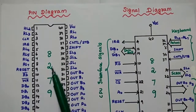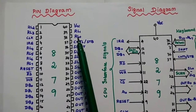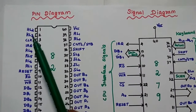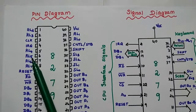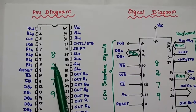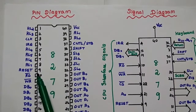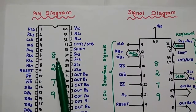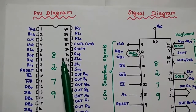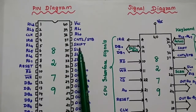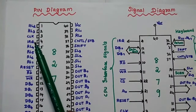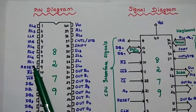The 8279 has 8 return lines: RL0, RL1, RL2, RL3, RL4, RL5, RL6, and RL7. These 8 return lines are used to interface with the matrix keyboard to get the data. After RL0 to RL3, there are 2 pins, then RL4, RL5, RL6, and RL7 follow.